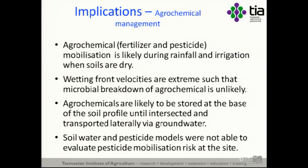In terms of agrochemical management, fertiliser and pesticide mobility is likely to be very high when soils are dry — the opposite of all recommendations, which say apply to dry soils to minimise the chance of runoff. Wetting front velocities of 200 to 12,000 millimetres per hour mean there's no opportunity for microbial breakdown of agrochemicals in the soil water. Agrochemicals are likely to be stored at the base of the soil profile until intersected and transported laterally via groundwater. Soil water and pesticide models simply cannot evaluate movement of these substances in these soils — we have complete model failure.